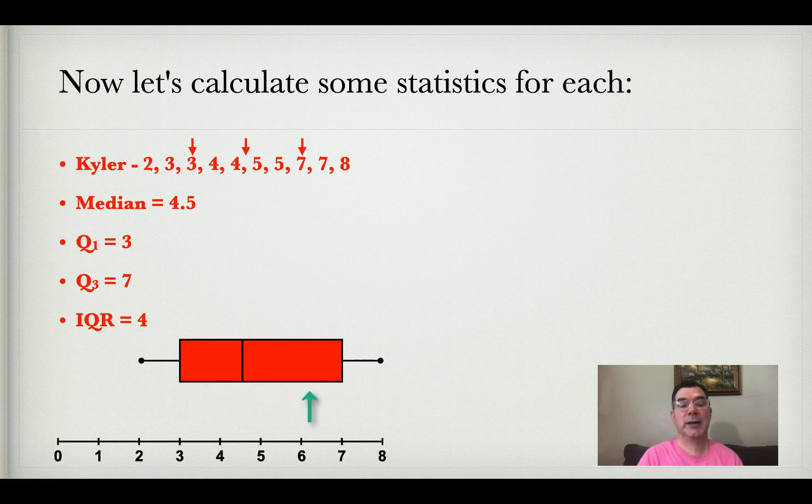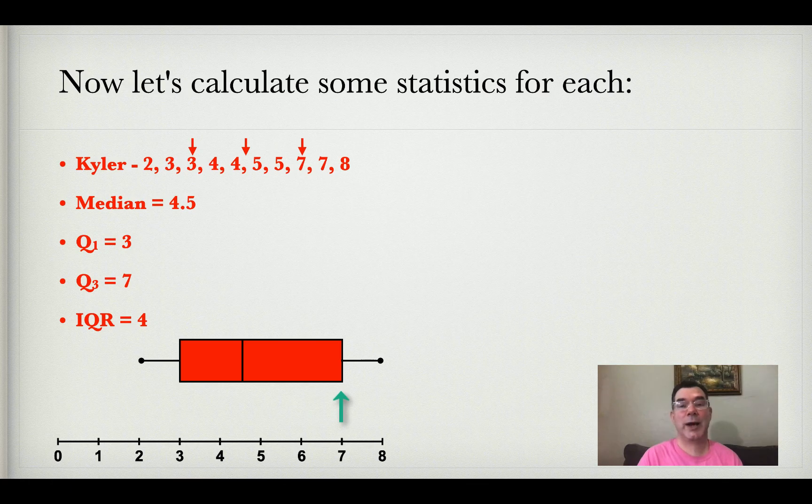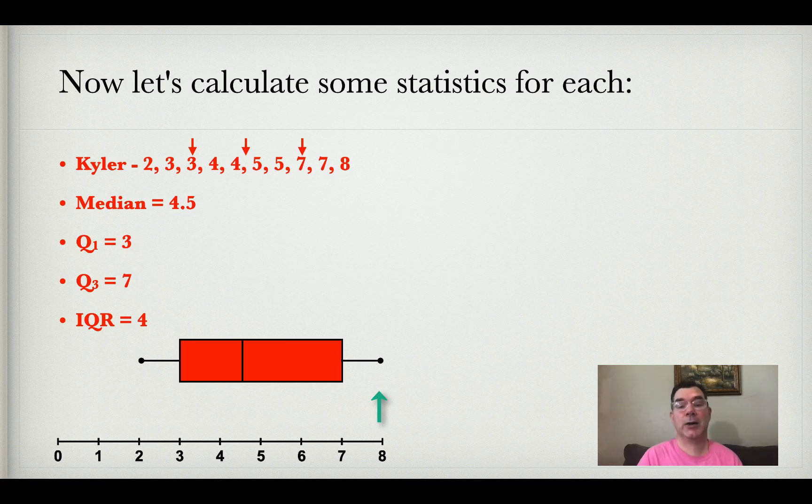It's got the upper quartile of seven represented by the right edge of the box, and the maximum of eight represented by that dot on the right hand side.